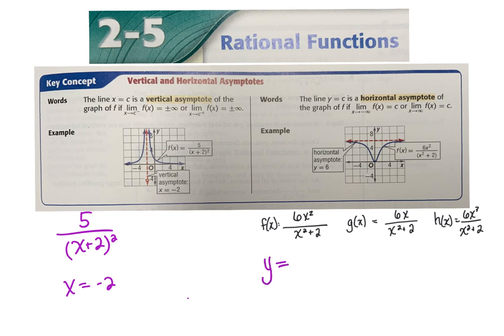When the degrees are the same, the horizontal asymptote will be y equals the ratio of your leading coefficients. So it's y equals the leading coefficient of the numerator over the leading coefficient of the denominator. In this case, 6 over 1, so the horizontal asymptote is at y equals 6. You'll notice that's exactly where the function approaches.